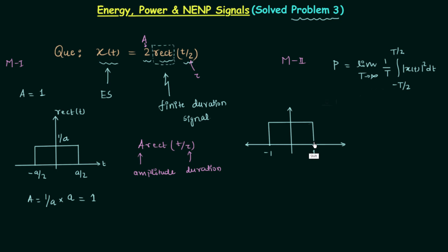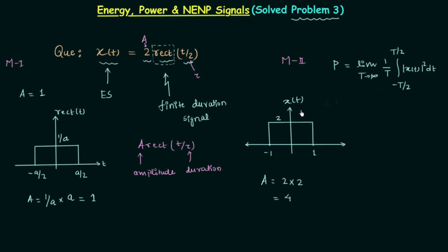If you calculate the total area it is not equal to unity, so this rectangular signal is not a unit rectangular signal. The area is height times width: height is 2 and width is 2, giving total area equal to 4. Therefore this is a simple rectangular signal, not a unit rectangular signal.